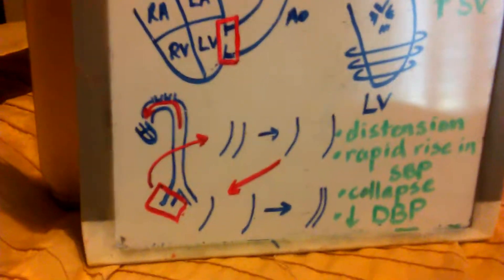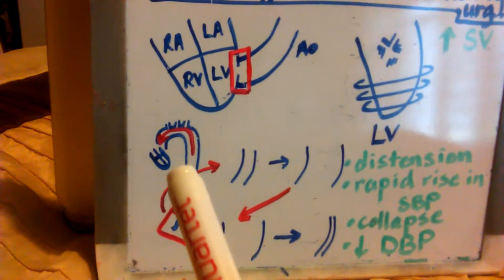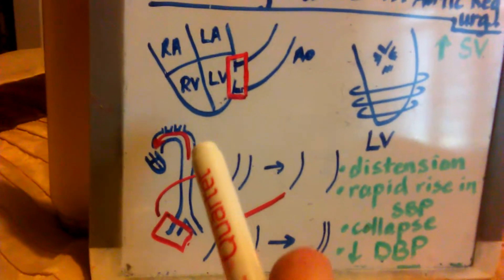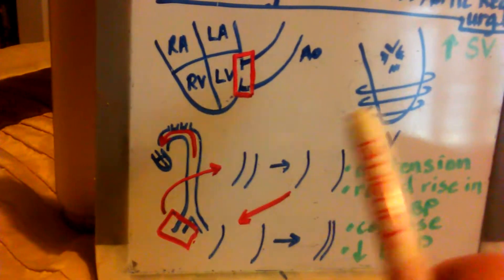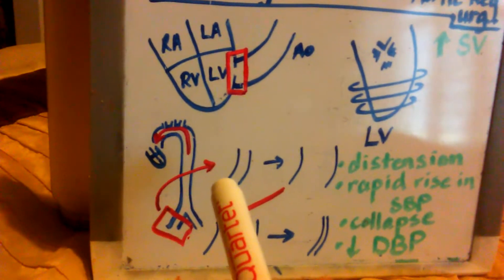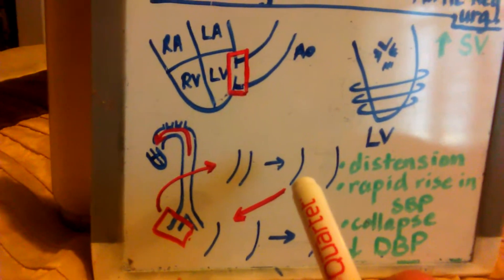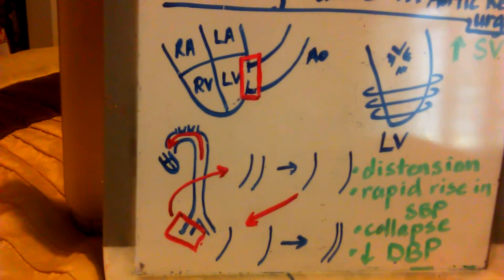And so, what happens with this increase in stroke volume is that, let's say this is your heart, here's your aorta coming down, here's your iliacs, and what happens in systole is that you have rapid distension of the peripheral arteries and a rapid rise in systolic blood pressure.